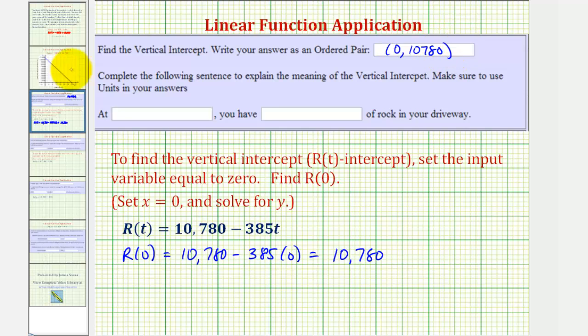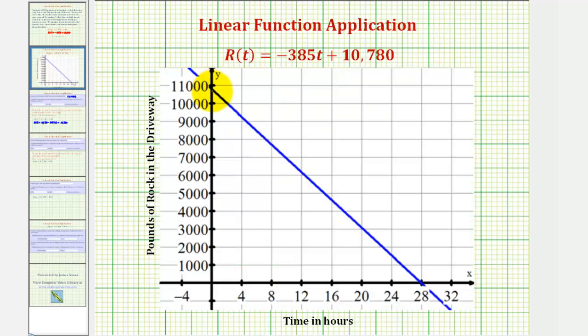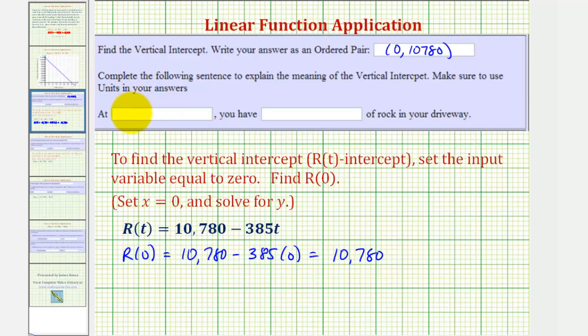If we go back to our graph just for a moment, we found this point right here, which means at zero hours, since t is zero, you have 10,780 pounds of rock in your driveway.